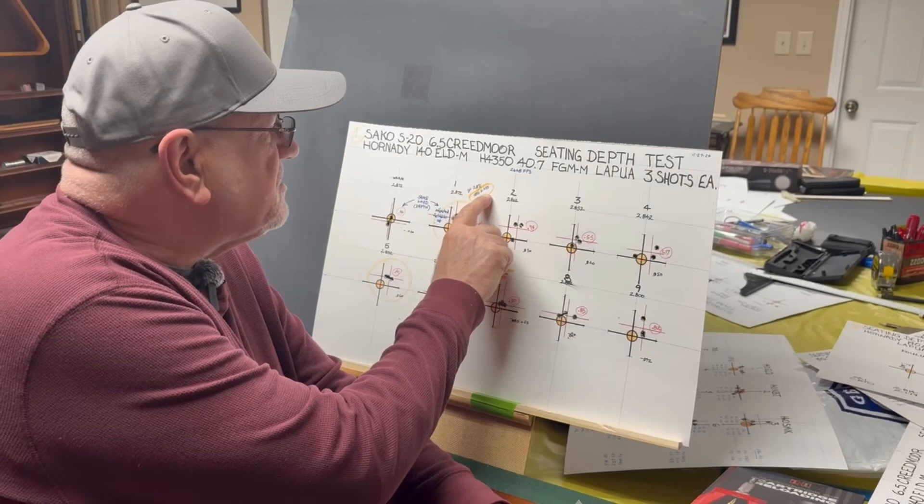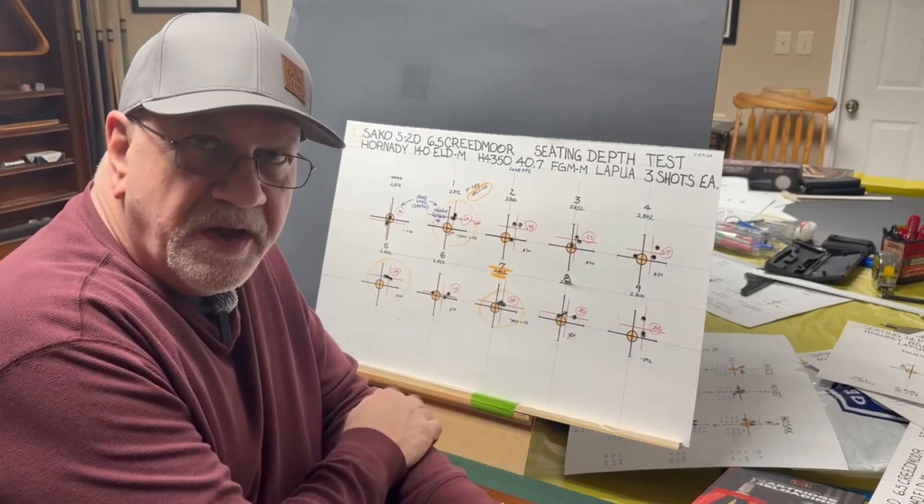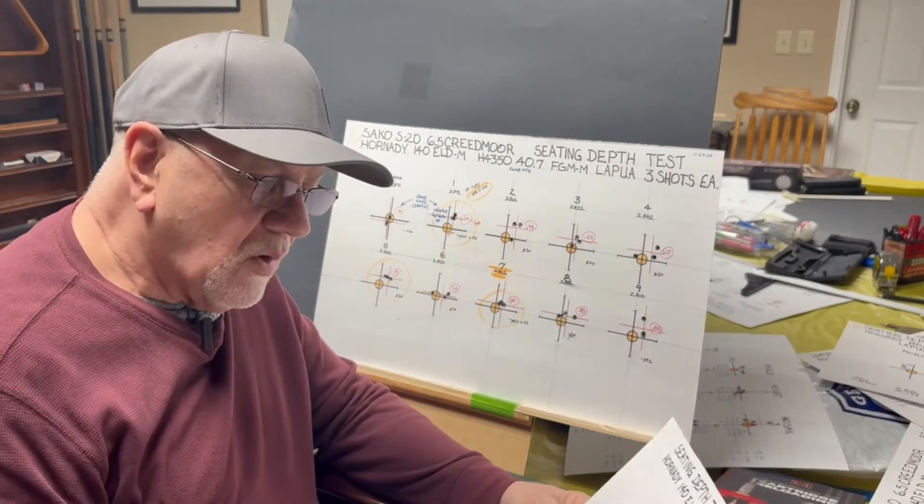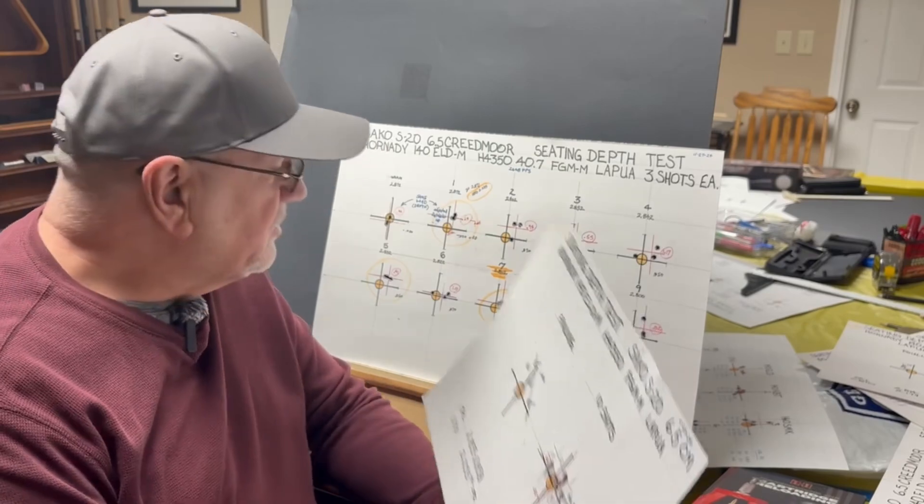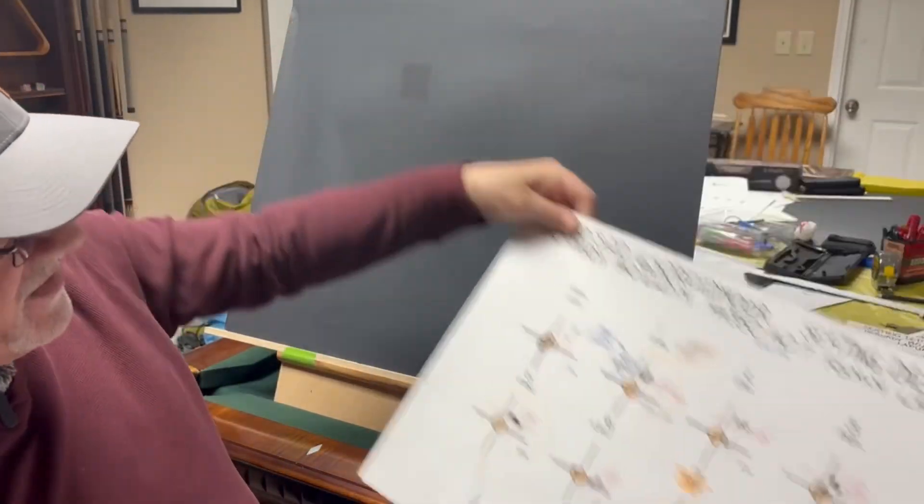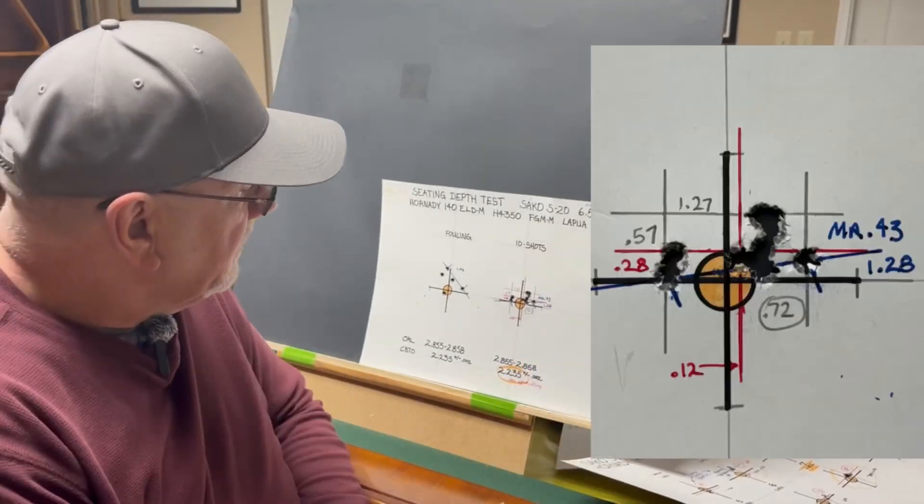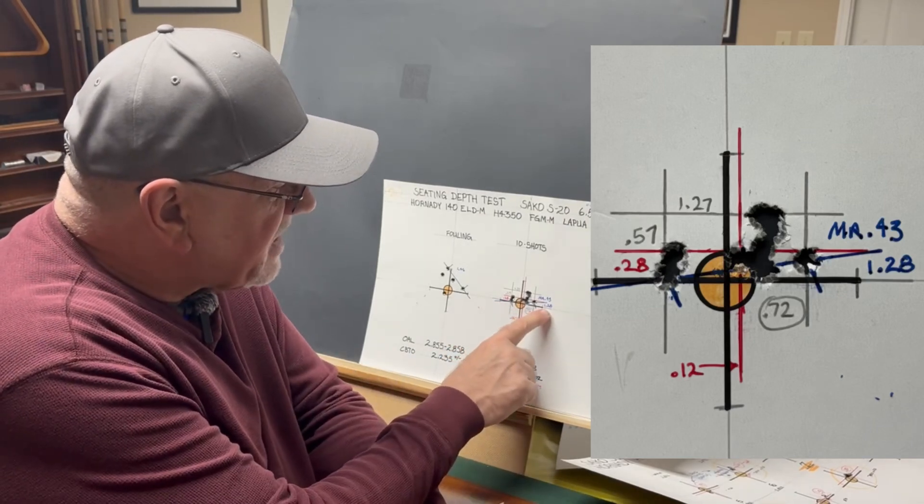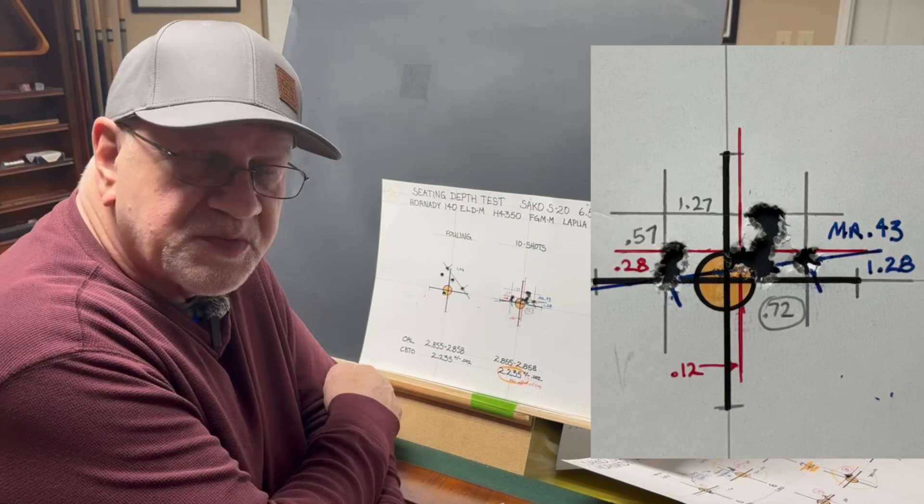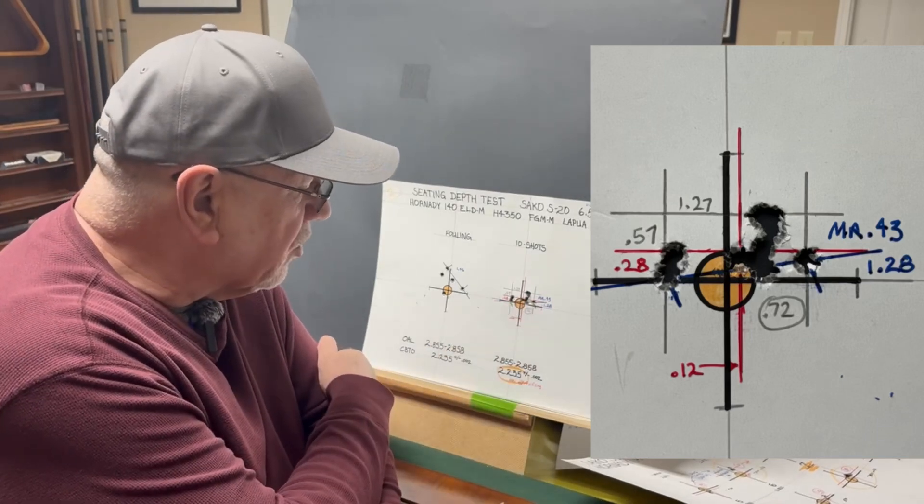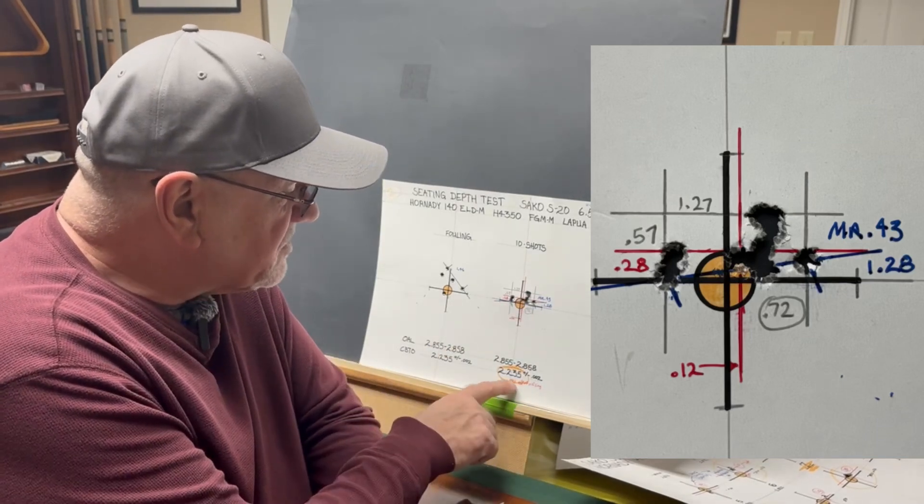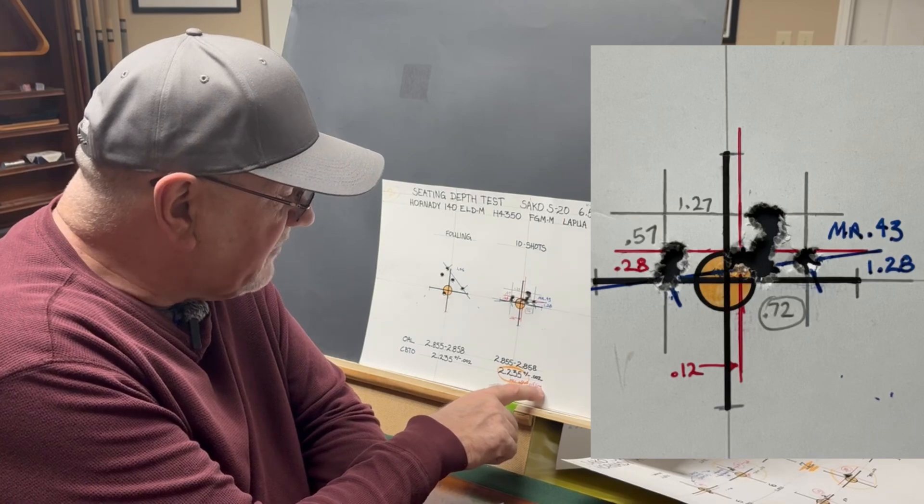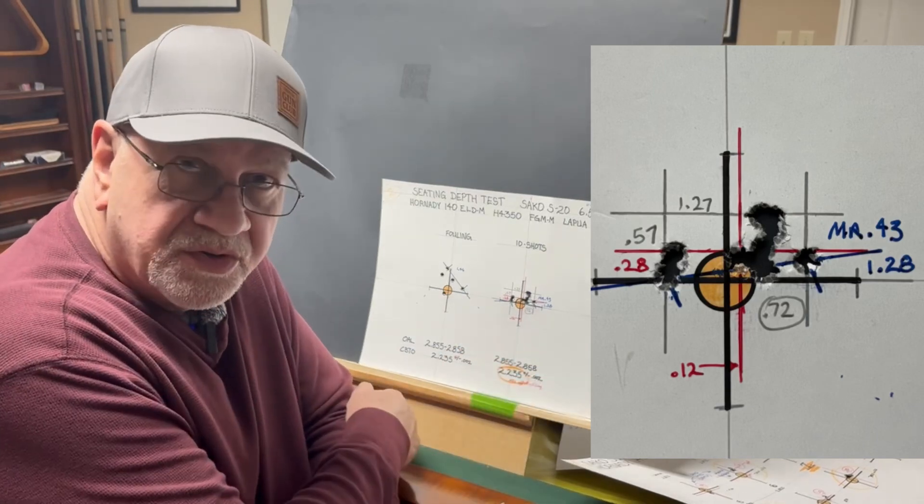That actually had a cartridge-based to ogive of 2.235. So, I loaded up another 10 rounds plus five fouling shots and I shot this group and it strung pretty good horizontally but yet it was a 1.28 extreme spread with a mean radius of just 0.43 inches. And this was 21 thousandths off of the riflings plus or minus 1 or 2 thousandths.